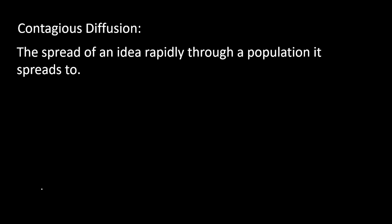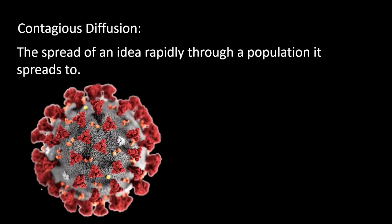Expansion Diffusion branches off into four different types. The first is Contagious Diffusion, which is the spread of an idea rapidly through a population. It's just going to increase rapidly as it reaches a population. The coronavirus is a good example — when it came to America, Italy, India, and Australia, it really increased rapidly.